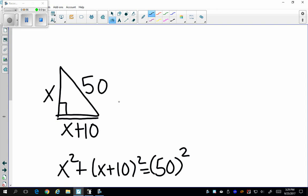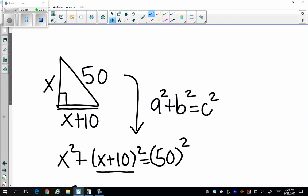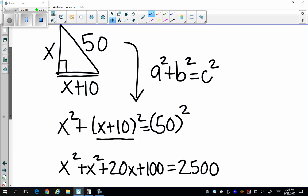Now that I see I'm using a right triangle I can just plug this into the Pythagorean formula which is a squared plus b squared equals c squared where c is my hypotenuse. So I'm plugging them into my formula. I'm going to FOIL out x plus 10 squared to get x squared plus 20x plus 100 equals 2500.